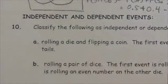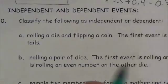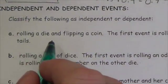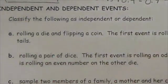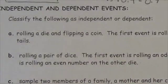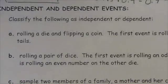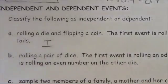The question says to classify the following as independent or dependent. The first one: you're rolling a die and flipping a coin. The first event is rolling a six and the second event is obtaining tails. Rolling a six does not impact the sample space or the probability of the second event at all. These are independent.